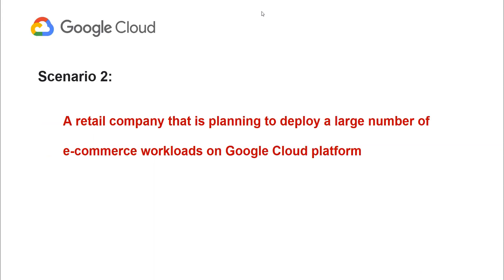Another example would be a retail company that is planning to deploy a large number of e-commerce workloads. The company would need to ensure the infrastructure is scalable and can handle a high volume of traffic and transactions. By building a landing zone on GCP, the company could ensure that the necessary infrastructure is in place to support the workloads and that the workloads are distributed across multiple regions for better performance and availability.